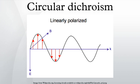Circular dichroism is dichroism involving circularly polarized light, that is, the differential absorption of left and right-handed light.